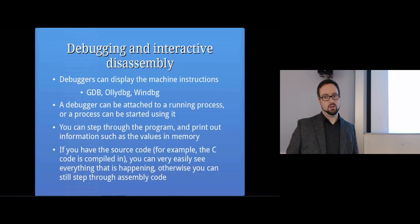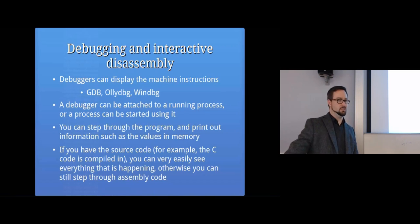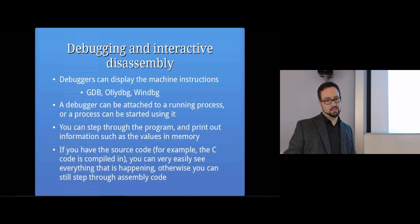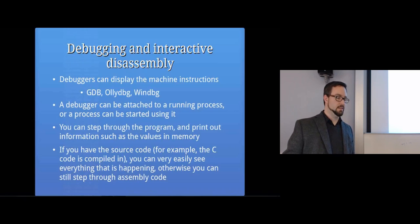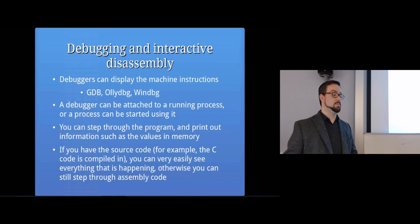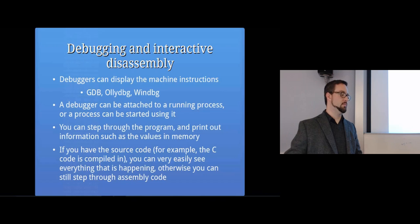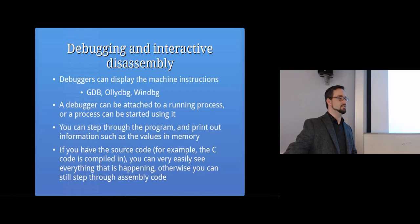If you use a debugger, it will show you the machine instructions. You can attach it to a process - some examples are GDB (the GNU Debugger), OllyDbg, and WinDbg. We'll be using GDB and OllyDbg soon in this module and the next. This topic about malware links in really well with what we're doing next semester - exploit development, which involves using a debugger, stepping through code, looking at machine instructions, and figuring out how to cause a buffer overflow, for example.